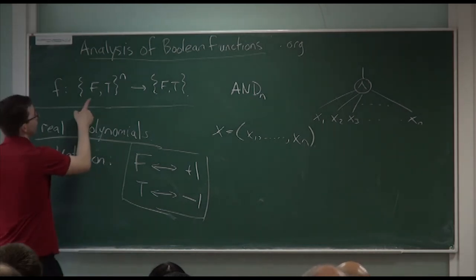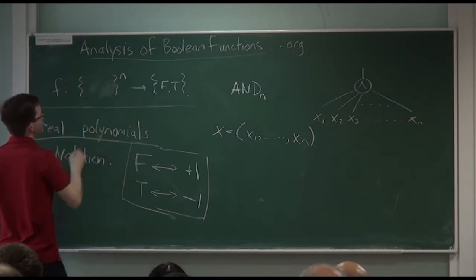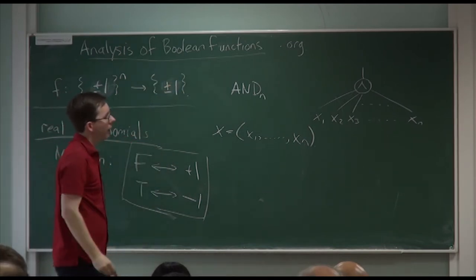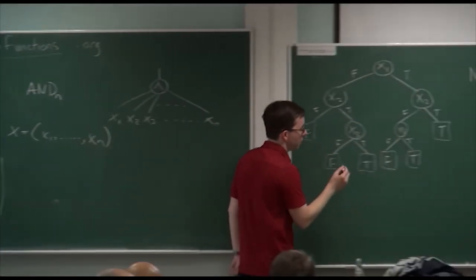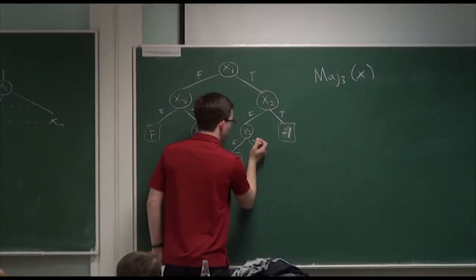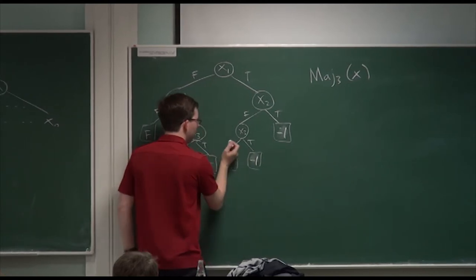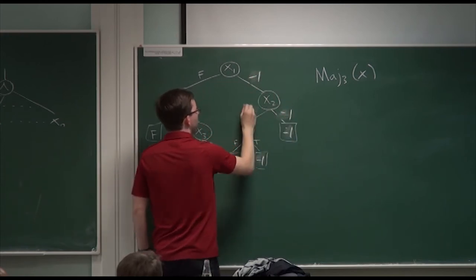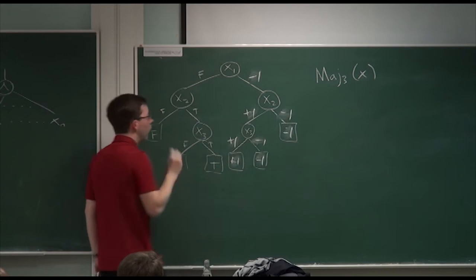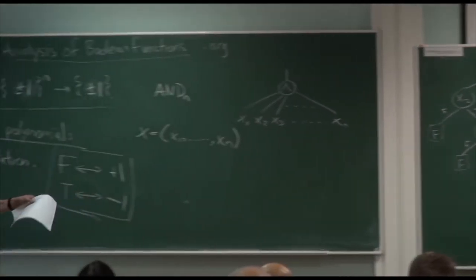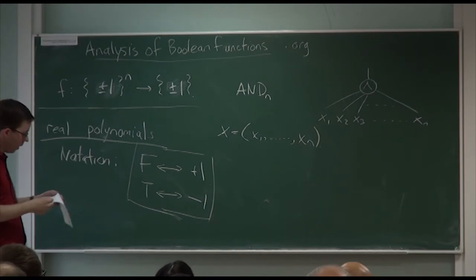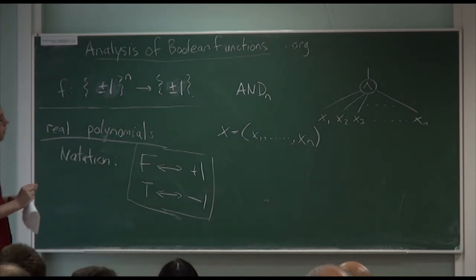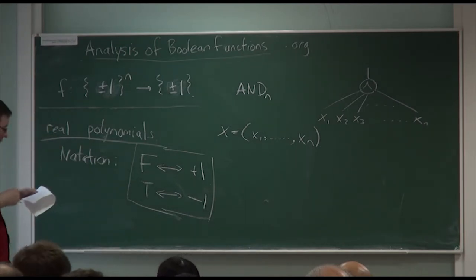The convention of using plus or minus 1 thought of as real numbers is quite important for analysis of Boolean functions. Whether you call this one false or true doesn't really matter — just to annoy you a little bit, I'll stick with false equals plus 1 and true equals minus 1. That already takes a little while to get used to, so we have to change everything — the inputs will be plus 1 and minus 1, and the outputs will also be plus or minus 1. So that's the most difficult part of this talk.